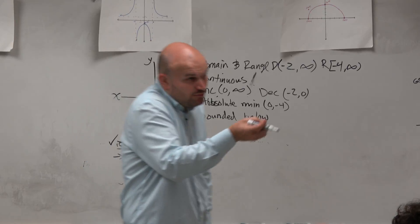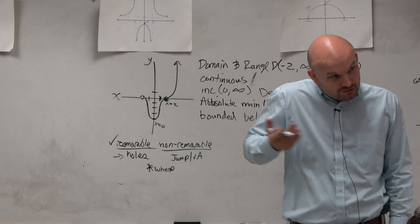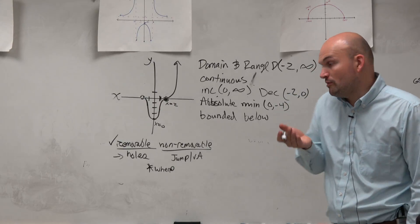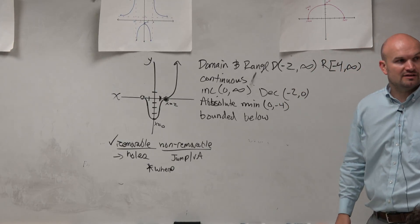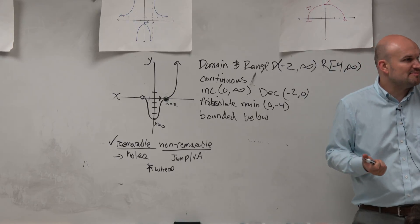Basically, what bounded below means is there is a restriction on how low that graph can go. It's bounded. It's restricted going below 0, negative 4. So when you have an absolute min, you know it's going to be bounded below.